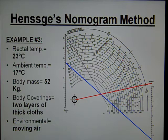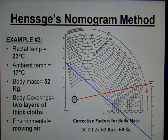In this case, I'm going to take 52 kilograms and look up the corrective factors multiplier, which happens to be 1.2. When I take 50 times 1.2, that's 62 kilograms. Now I'm going to round down to 60 kilograms because it's the closest unit of 10.